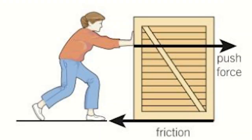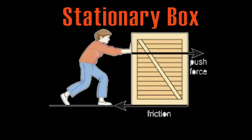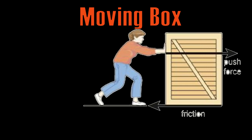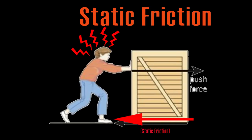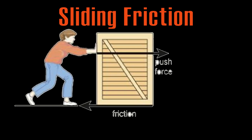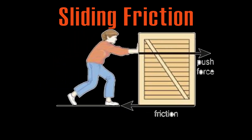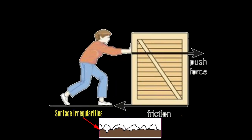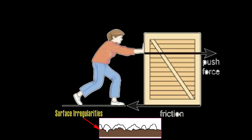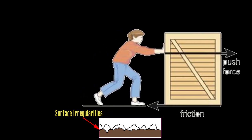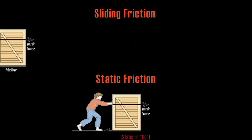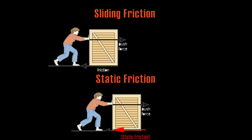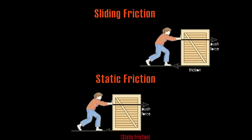Have you ever tried to move a heavy box from one place to another? What is easier — to move it from rest, or when it is already in motion? The force required to overcome friction at the instant an object starts moving from rest is a measure of static friction. The force required to keep the object moving at the same speed is a measure of sliding friction. When the box starts sliding, contact points don't get enough time to lock together, so sliding friction is slightly smaller than static friction — making it somewhat easier to move an object already in motion.